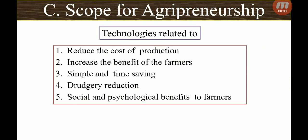Now let's look at the scope for agri-entrepreneurship. Here, some technologies can reduce the cost of production, increase the benefit to farmers, are simple and time-saving, reduce drudgery, and provide social and psychological benefits to farmers. If technologies are related to these factors, they will help make the environment better and we can get more profit in this sector.